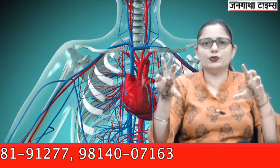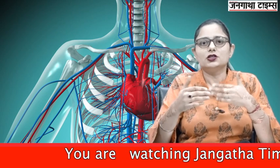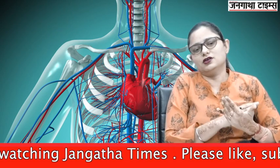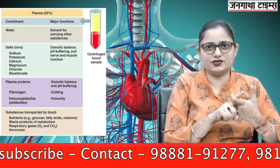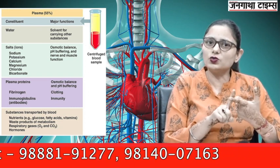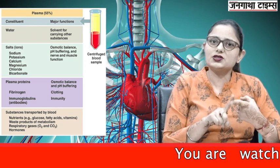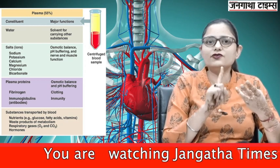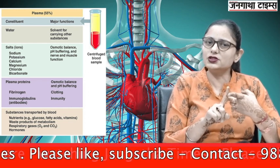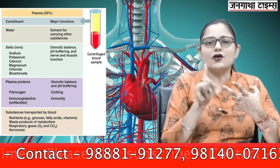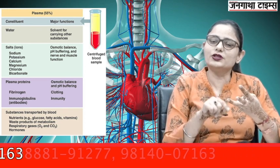Last is the fluid matrix of the blood — the blood plasma. Blood plasma is mainly composed of water. Other components include plasma proteins, electrolytes, and other nutrients. The plasma proteins are albumin, globulin, and fibrinogen, all released by the liver. Albumin is responsible for maintaining the osmotic pressure of the blood. Fibrinogen plays an important role in blood clotting. Globulin plays an important role in the immune system.